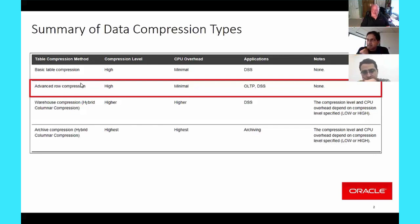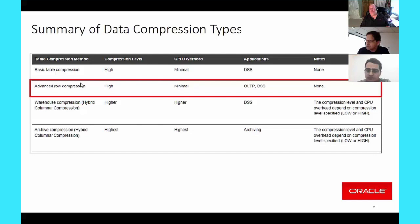Percent free is something customers should definitely look at if they plan to update their rows quite a bit. With compression, we fit a lot more rows into the block—a block that used to fit 100 rows might now fit 200, 300, or 400. If you're going to update all those rows, there needs to be room for expansion, otherwise you'll get row chaining. So percent free is something customers should definitely be cognizant about when using advanced compression. The default PCT free for non-compressed tables is about 10%, but you could increase it for compressed blocks.